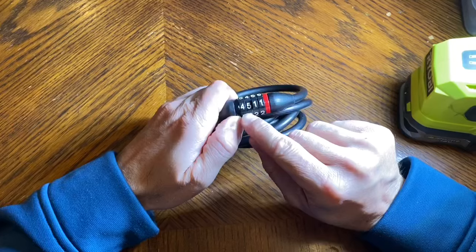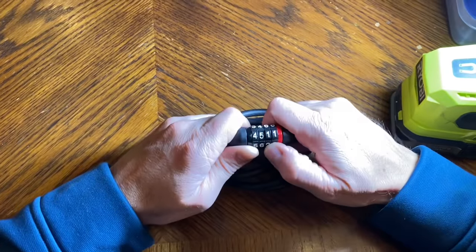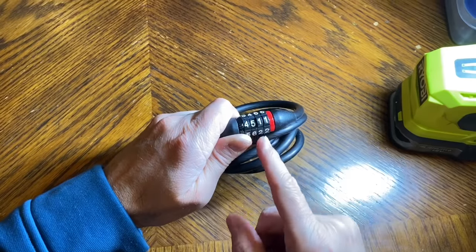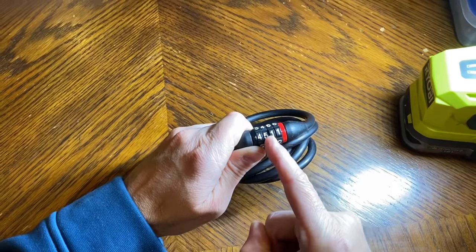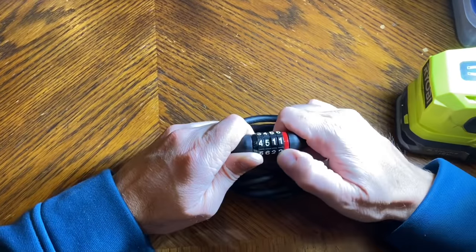We think we have the first two: four five. So now we're trying to find the third combination. Remember, we're looking to the right, the gap to the right of the number we're trying to figure out.